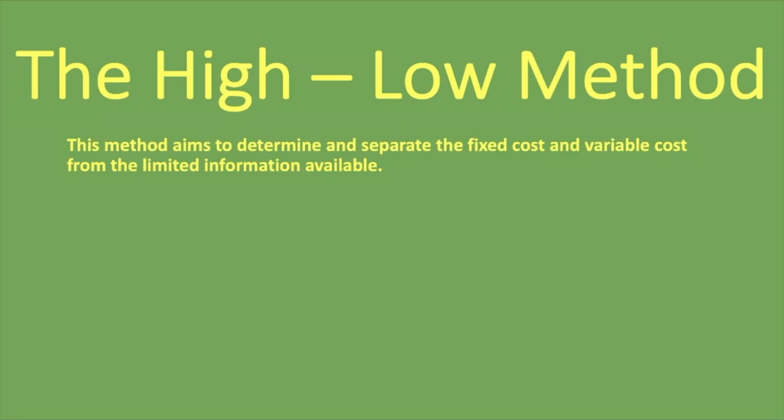Meaning you don't have enough information to directly tell you what the variable cost and fixed costs are, so you're using the high-low method to do this. It's quite easy. So how do you calculate the variable cost using the high-low method? What is the formula for doing so?